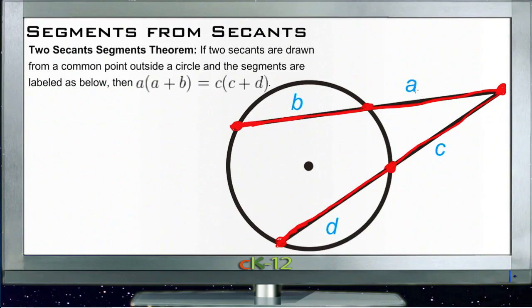The theorem says that if we were to take the value of A, or in other words, the length of this little segment, and multiply it by A plus B, or in other words, the length of that whole line from the far side of the circle back out to the vertex, then it would be the same as the length of C multiplied by C plus D, or this whole line down here.